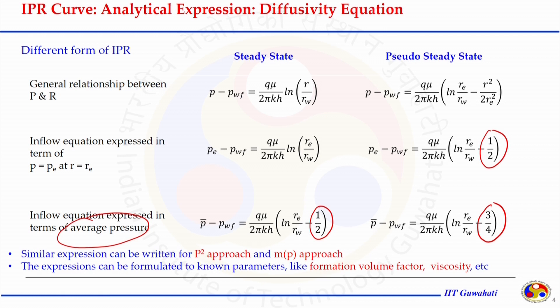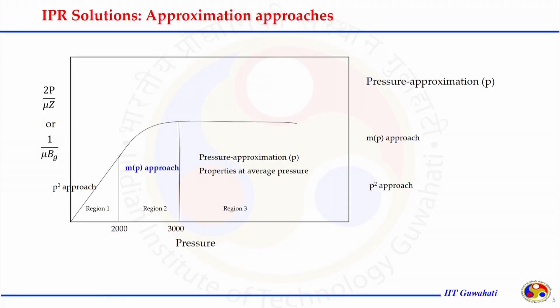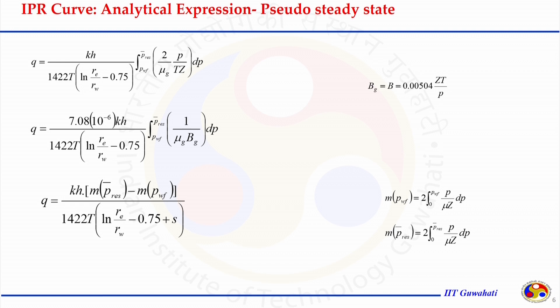If we choose the average reservoir pressure, the expression takes a different form. We get 1/2 because Re equals Re; if we use the volumetric average pressure, we get an additional term — minus 1/2 in steady state and minus 3/4 in pseudo-steady-state conditions. Similar expressions can be written for the P-square and MP approaches. The choice of approach depends on the curve of properties like P/μZ or 1/μB_G as a function of pressure.